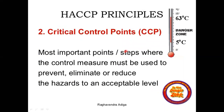The second principle is the critical control point. By identifying the hazard, we have to determine how to control it — how we can eliminate or reduce that kind of hazard. We have to consider which steps to take in order to control these hazards through prevention, elimination, and reduction up to an acceptable level.